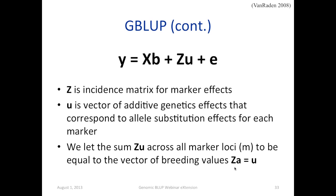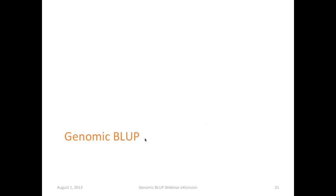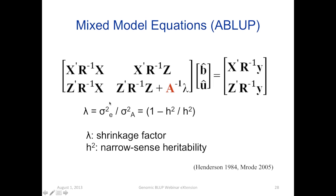If I really simplify the genomic estimated breeding value for an individual, it's really a summation of all the marker effects in the model. The mixed model equations for genomic BLUP are exactly the same, except lambda is different, and we substitute the inverse of the A matrix with the inverse of the G matrix. Lambda is defined as the sum across all loci of the minor allele frequencies times the ratio of error and additive genetic variance — essentially the inverse of heritability.